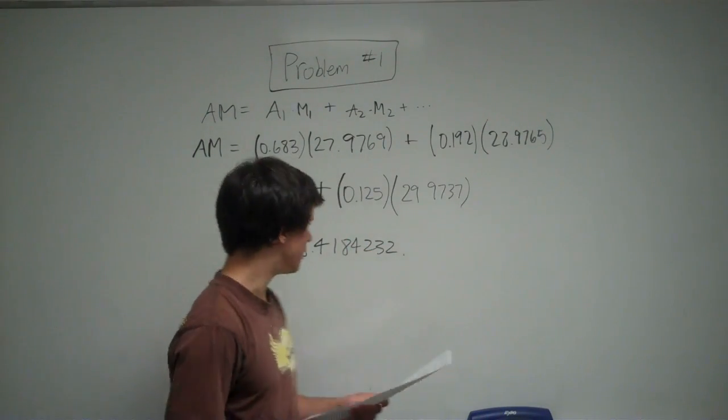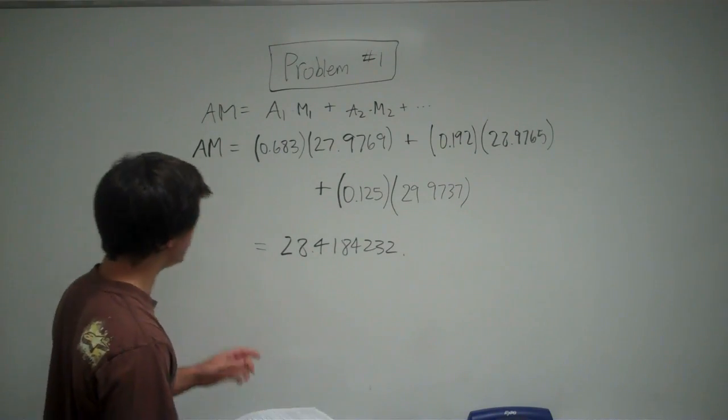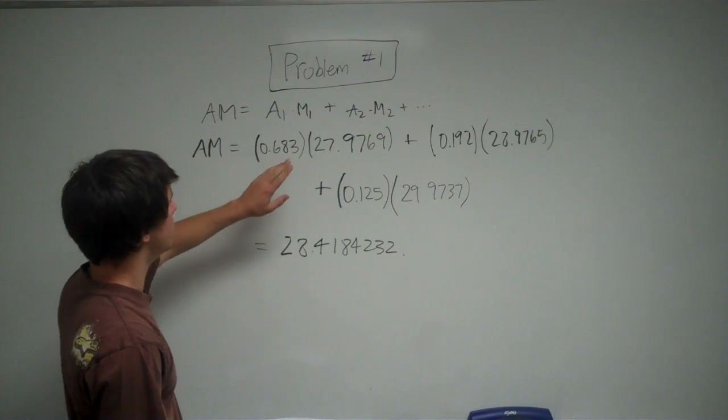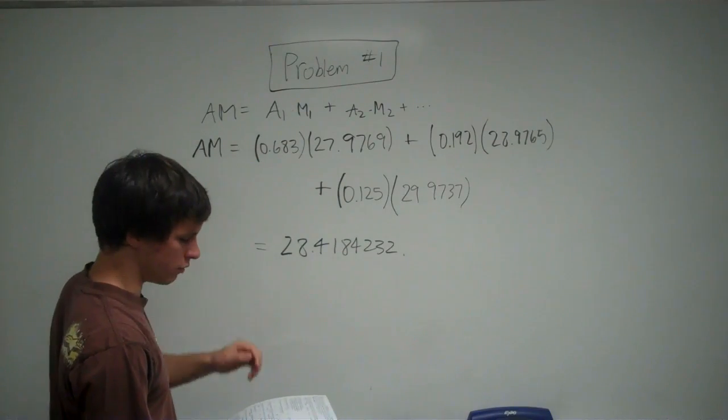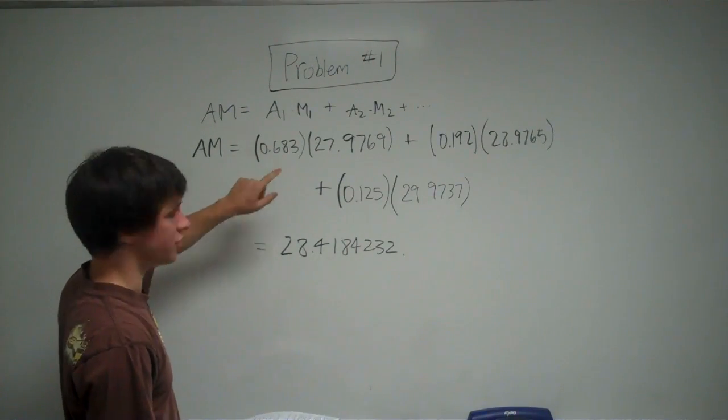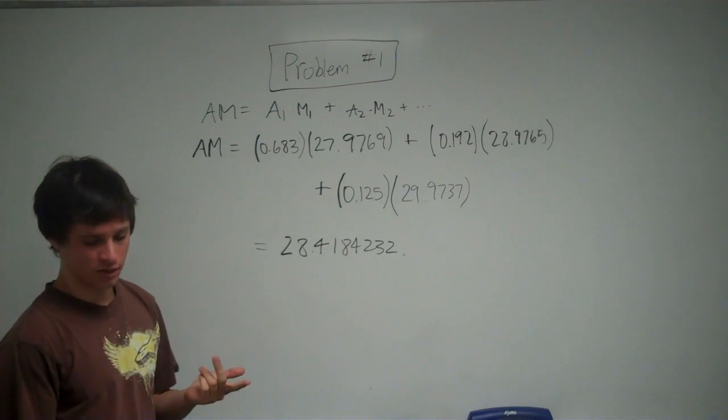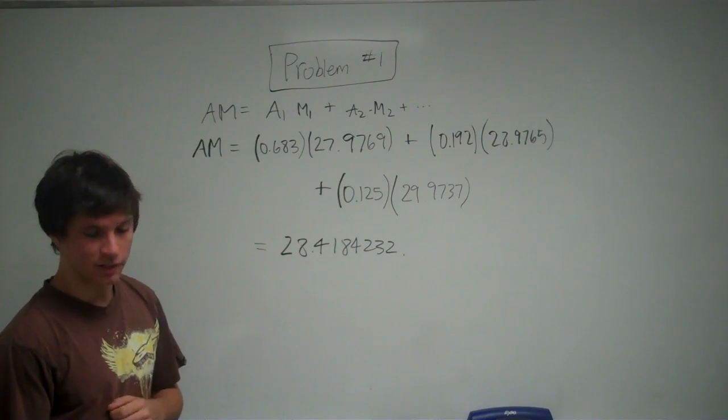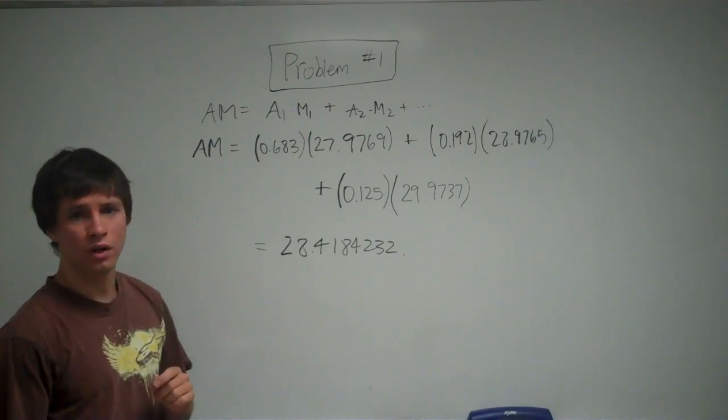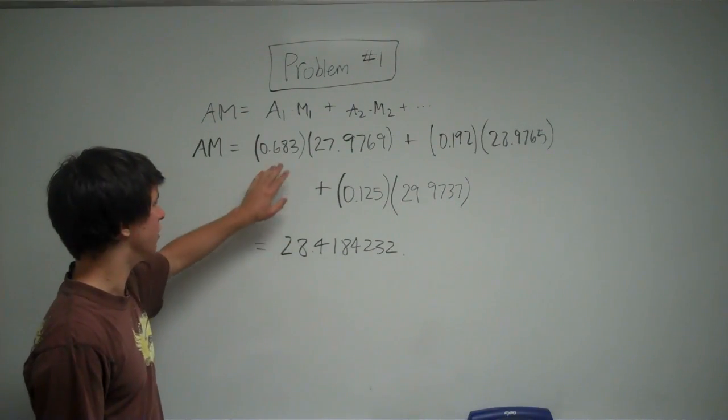The reason you're not going to pick this is because of significant figures. If you look at the details the question gave you, the percentage abundances are only specific to three significant figures, like 68.3% or 19.2%. So your final answer can't be any more specific than three digits.